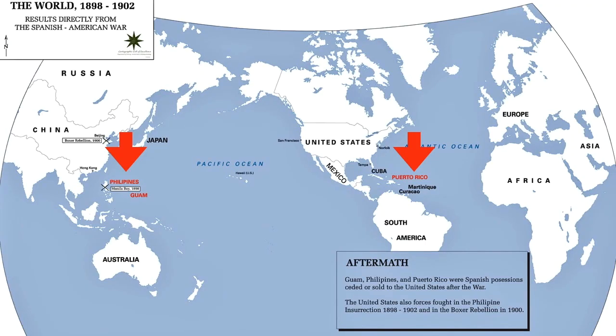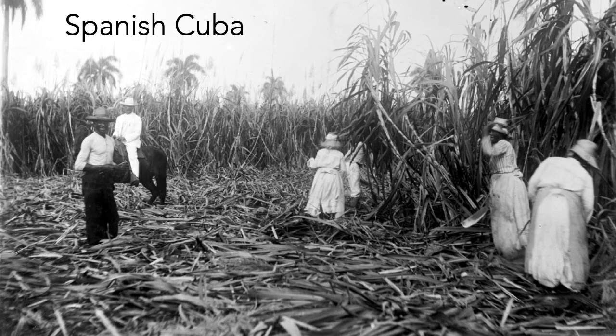The conflicts of 1898 were focused in two regions: Cuba and the Philippines. Here's a map of the world — you can find the United States, and the two red arrows I've placed on the map: one identifies Puerto Rico, right next to Cuba — Puerto Rico was also a Spanish territory at the time and the United States would claim it at the end of the war — and the other identifies the Philippines, a group of islands in Southeast Asia. The fighting will occur in both Cuba and the Philippines.